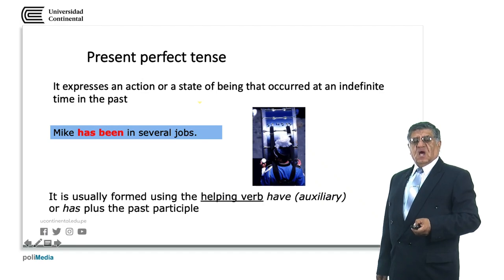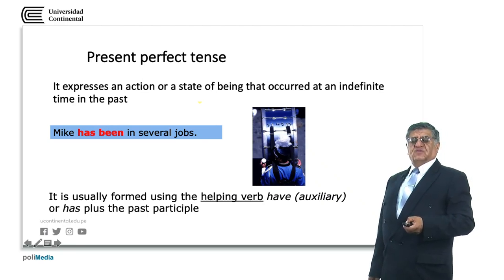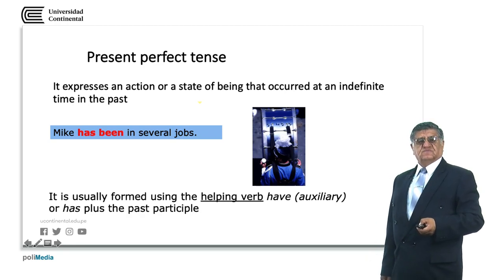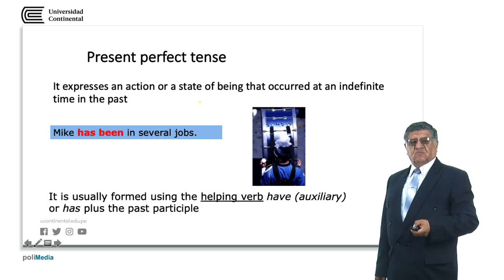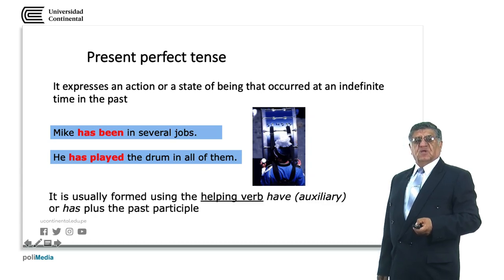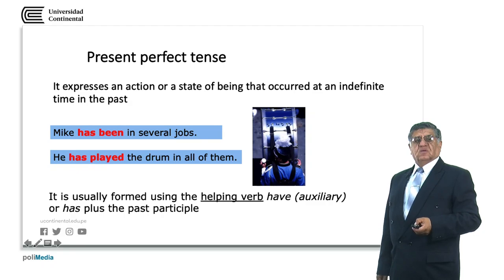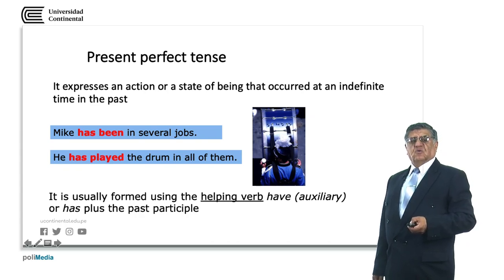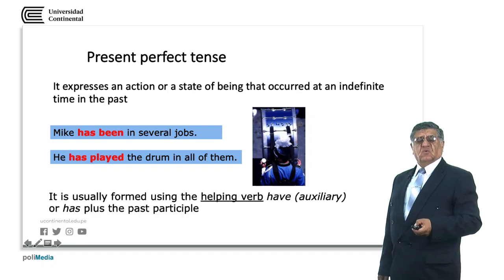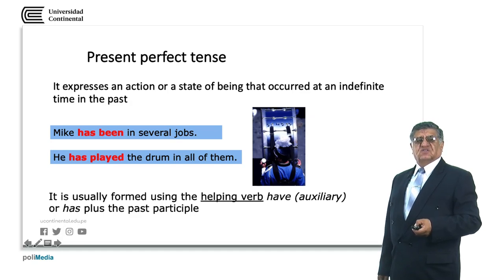After the auxiliary, the past participle of the main verb comes. For example: he has played the drum in all of them. Has is the auxiliary, played is the past participle form, followed by the complement. Remember from our first classes that most English sentences have a subject, a verb, and a complement in that order — in this case we have a subject, a verb phrase, and a complement.